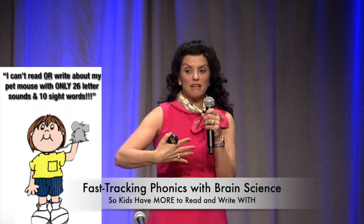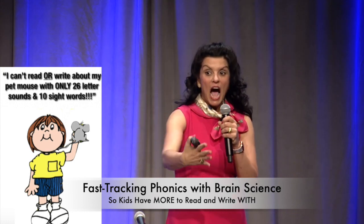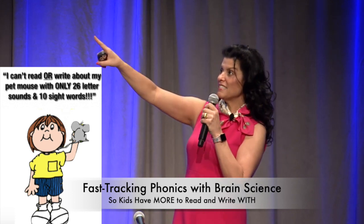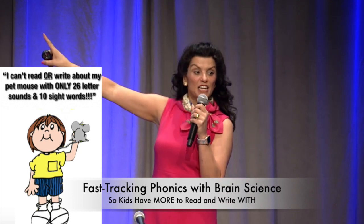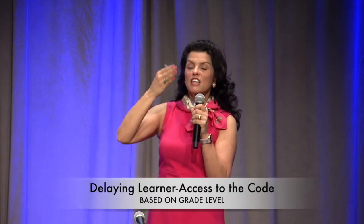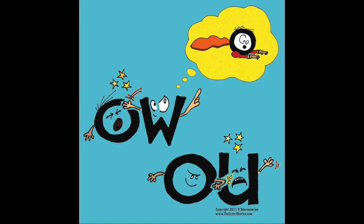If I have a pet mouse and I want to write about my pet mouse and it is kindergarten or even first grade, I could stare at my alphabet train all day long and I will never find the letter that says OW, because it is not up there. And by the time I get it, if I use a standard reading series, the OW/OU is traditionally taught in second grade. Well, my mouse is very likely to be dead by then, and I will not want to write about him at that time — I want to write about him right now.